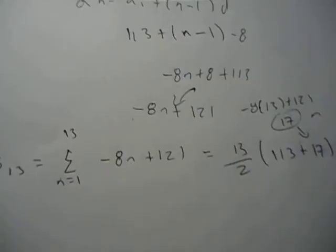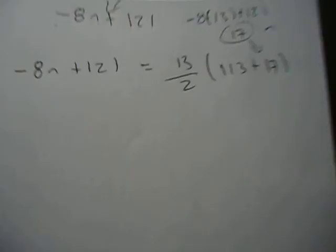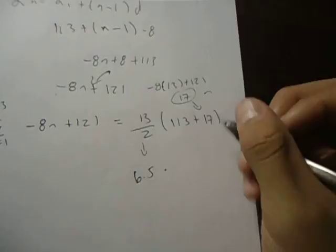And now, all we basically need to do is simplify that. So, we know this is 6.5. That's going to be multiplied by 130, and that gives us 845.